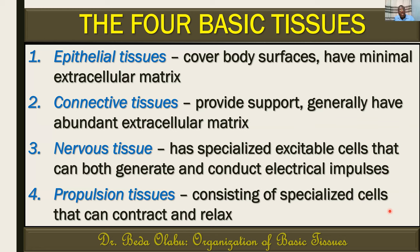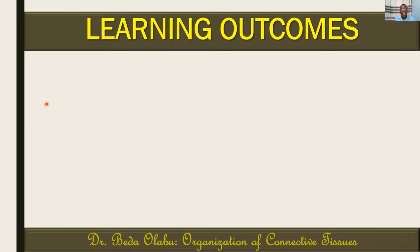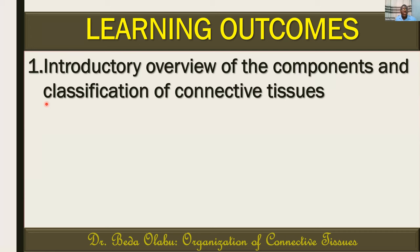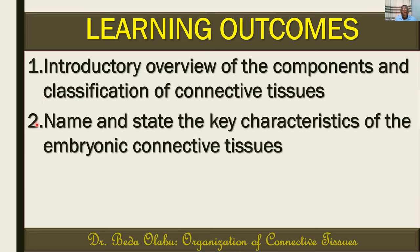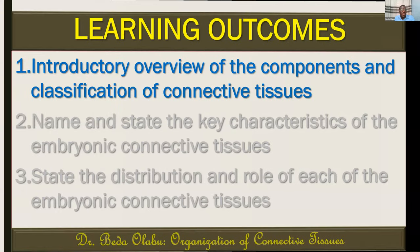With that in perspective, we are looking at this series on connective tissues. The learning outcomes of this particular lecture are: first, to give an introductory overview of the components and classification of connective tissues; second, to name and state the key characteristics of the embryonic connective tissues; and finally, to state the distribution and role of each of the embryonic connective tissues.